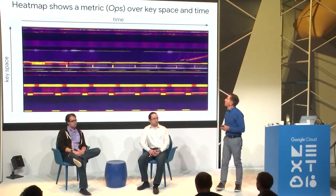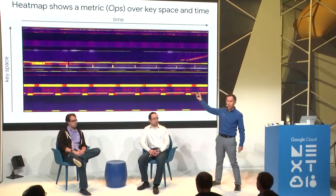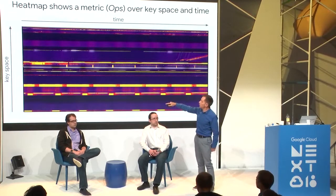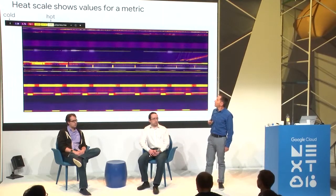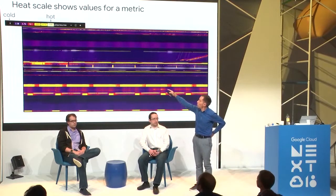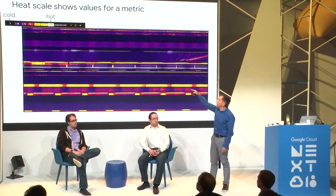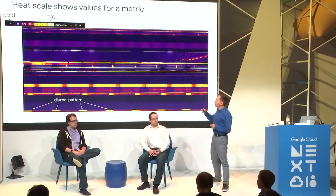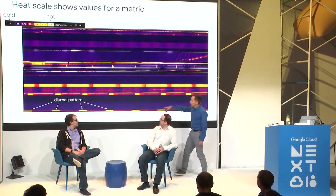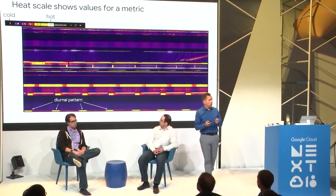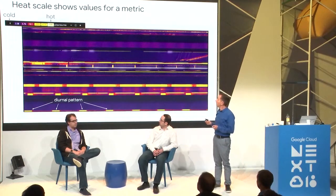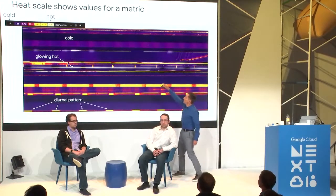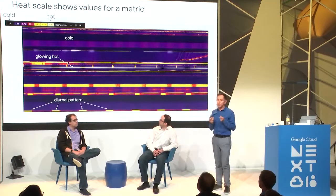This is the Key Visualizer heat map. Time goes horizontally from left to right — this example shows one week of Bigtable behavior. The key space is shown vertically, with the lowest keys at the bottom and highest at the top. The heat scale goes from cold black for zero, through dark blue, red, yellow, to glowing white for extremely high values. In this example you can see a diurnal pattern — there are about seven hotspots in the lowest key range, meaning someone hammered that key range heavily every night.